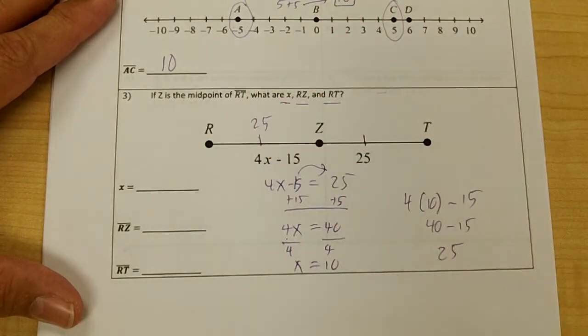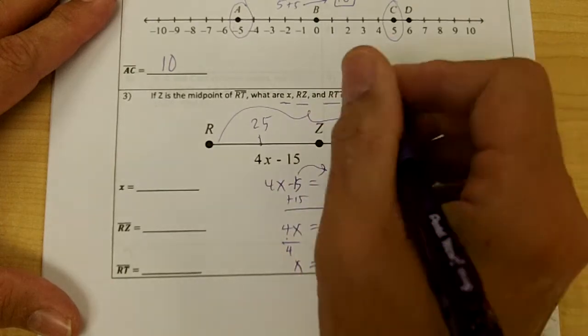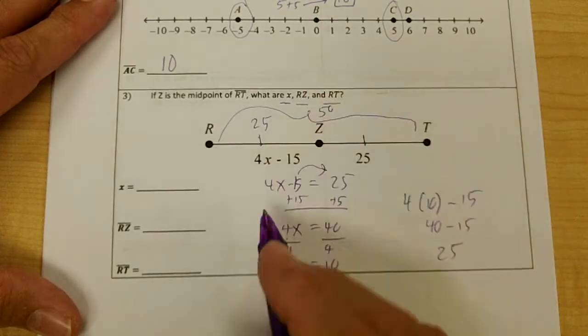So from r to z is 25, and that makes sense because these two have to be the same. The whole thing would be 25 plus 25, which is 50.